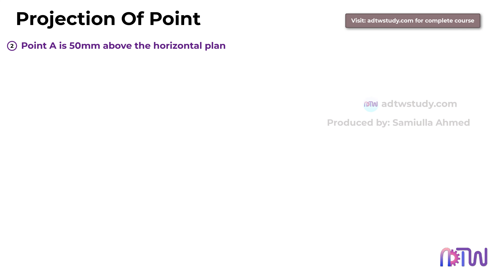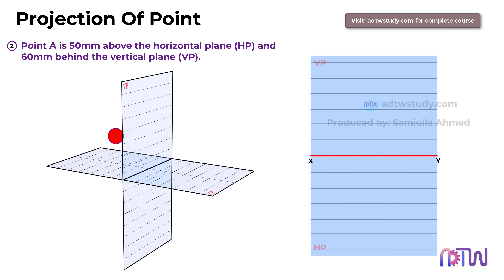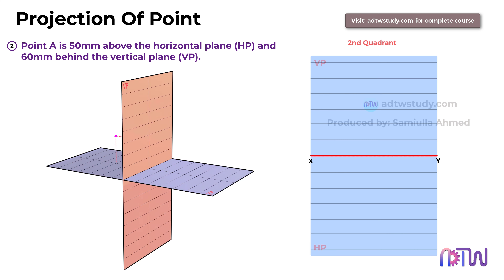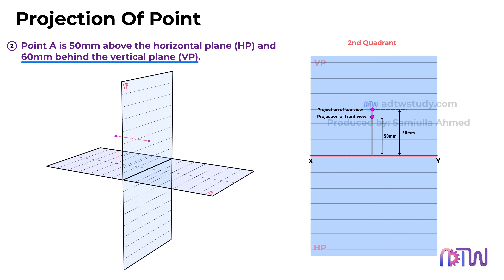Now let's examine another case. Suppose point A is 50mm above the HP and 60mm behind the VP — this means the point is in the second quadrant. In this configuration, placing the point above the HP and behind the VP results in both the top and front views being positioned above the xy-line. Both views align vertically, with the front view 50mm above the xy-line and the top view 60mm above the xy-line.